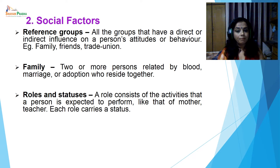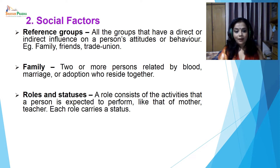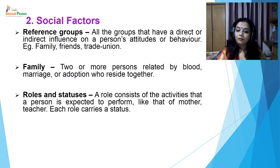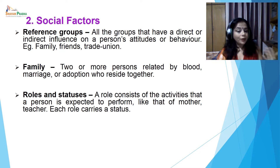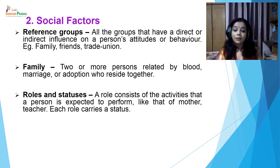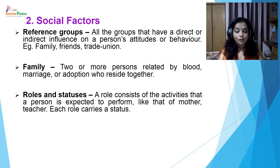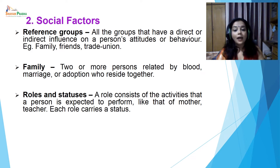The second category of factors which have an impact on buyer behavior are social factors, with three sub-factors: reference groups, family, and roles and statuses. A reference group includes all groups that have a direct or indirect influence on a person's attitudes or behavior — examples include family, friends, and trade unions. Even classmates have an impact on decision making. A marketer tries to understand which reference group a customer belongs to and accordingly designs their marketing strategies.